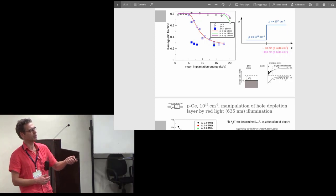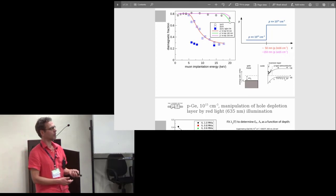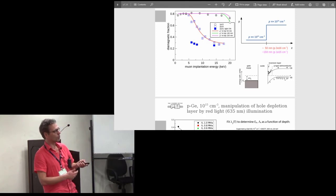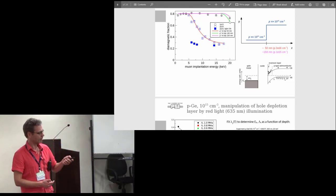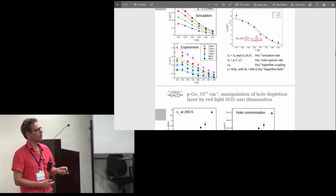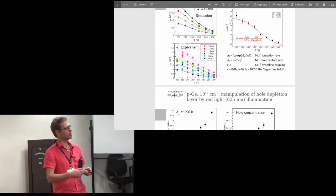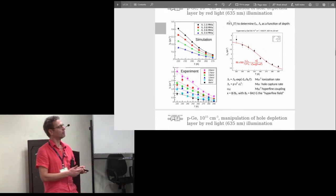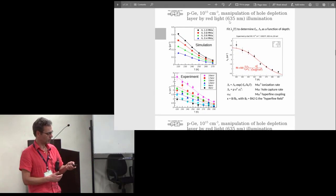This is what you know from textbooks, how inversion depletion layers should look like. This is I think the first direct proof that it really behaves like that. Now if you illuminate the sample, this 1 times 10 to the 15th sample, with red light where we cannot generate this persistent change or persistent removal of the depletion layer...